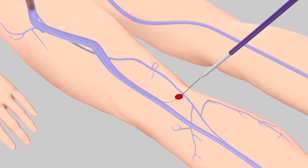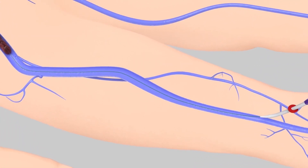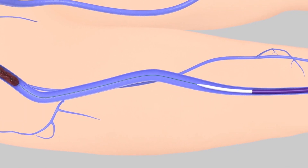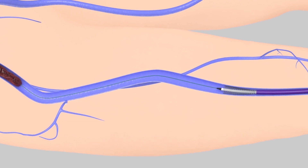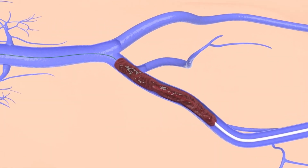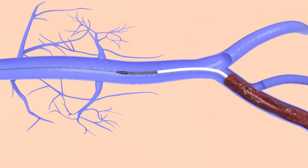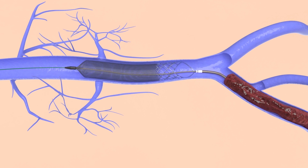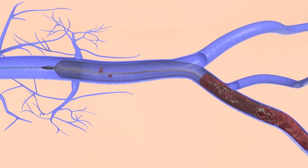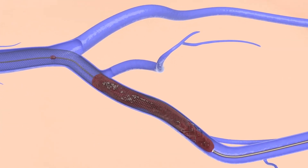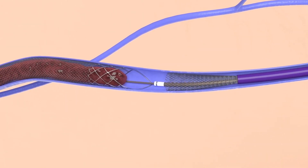Upon obtaining venous access, a guide wire is inserted and guided through the clot. The ClotTriever sheath is inserted over the guide wire and positioned below the clot, then the funnel is deployed to maximize clot capture. Next, the ClotTriever catheter is advanced past the clot and unsheathed to open the nitinol coring element and collection bag inside the vein. The catheter is then slowly retracted, coring and separating the clot from the vessel wall and capturing it within the collection bag, which prevents the clot from breaking loose. The collection bag is withdrawn into the funnel and collapsed to remove the entire clot. After successful clot retrieval, the sheath is removed and standard vessel closure is performed.